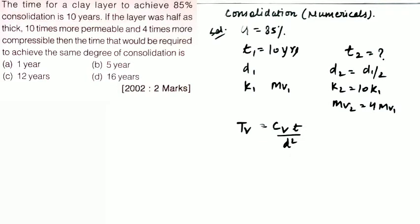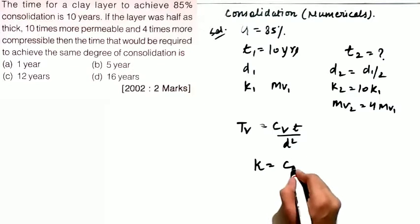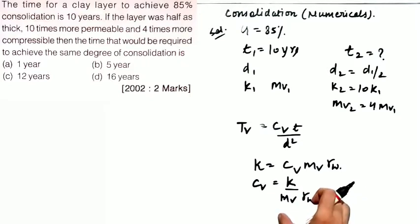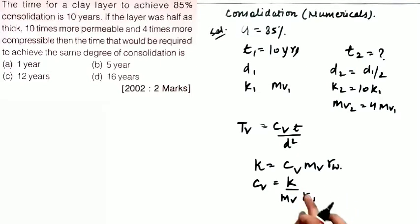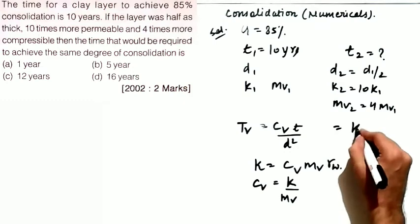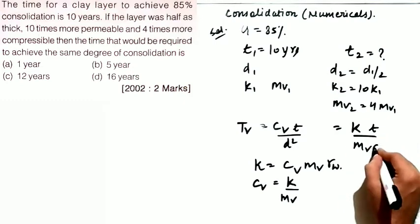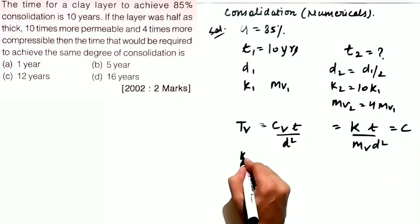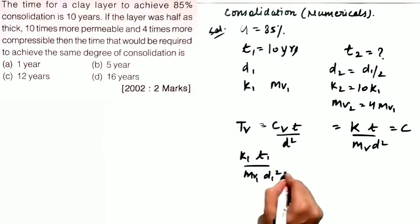Since cv is also the same in this case, we know k equals cv·mv·γw, so cv equals k divided by mv·γw. We will replace cv with this term since we do not have data for cv for both cases, but we have data for k and mv. Since γw is always constant, the unit weight of water will not change. We write cv in terms of k and mv, so the formula becomes k·t divided by mv·d² equals tv.